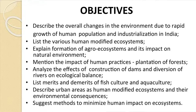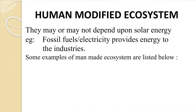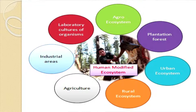Suggest methods to minimize human impact on ecosystems. Our first modified human ecosystem — and a foremost characteristic of all modified ecosystems — is that they are not dependent upon solar energy; instead, fossil fuel and electricity provide energy to the industries. The various modified ecosystems include agro ecosystem, plantation forest, urban ecosystem, rural ecosystem, agriculture, and industrial areas.